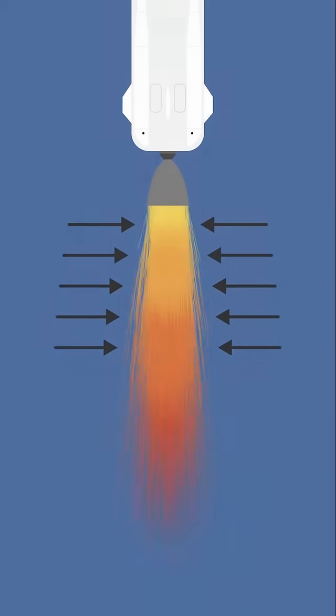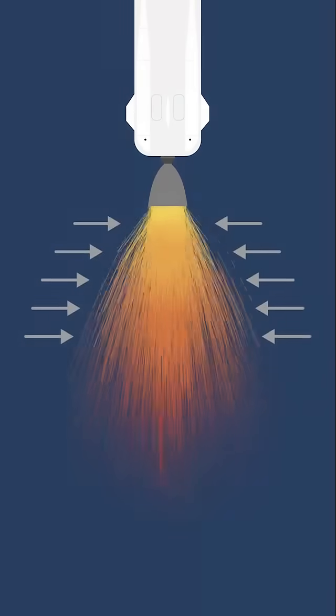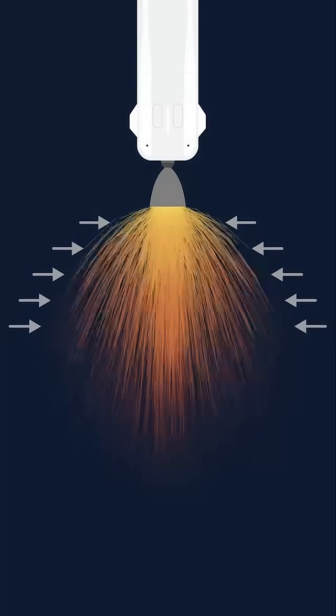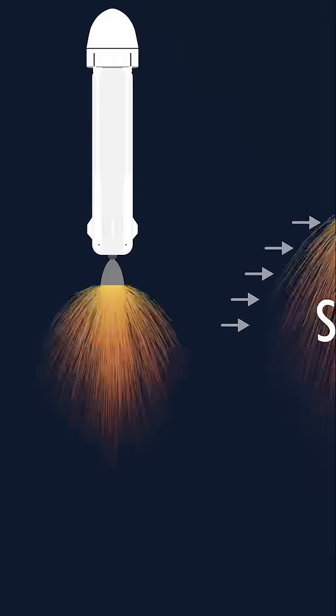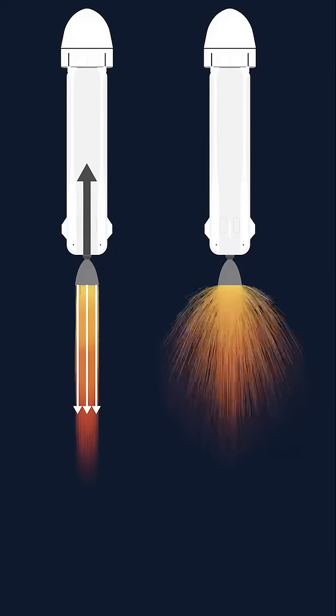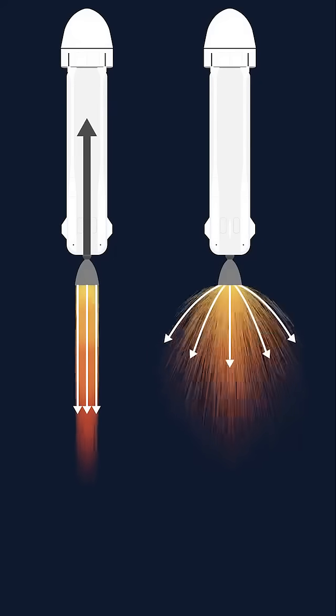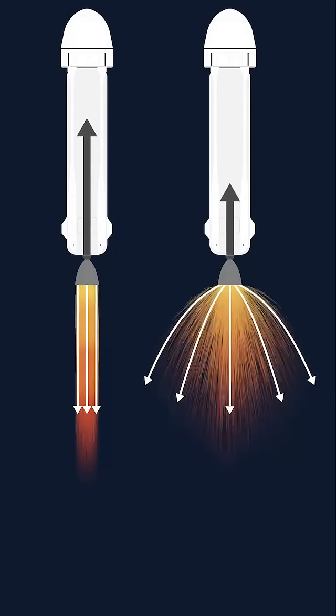But as the altitude increases, the ambient pressure decreases, causing the exhaust gas to expand. That sucks, because rather than going straight down and pushing the rocket along, the exhaust gas goes sideways, making the rocket engine less efficient.